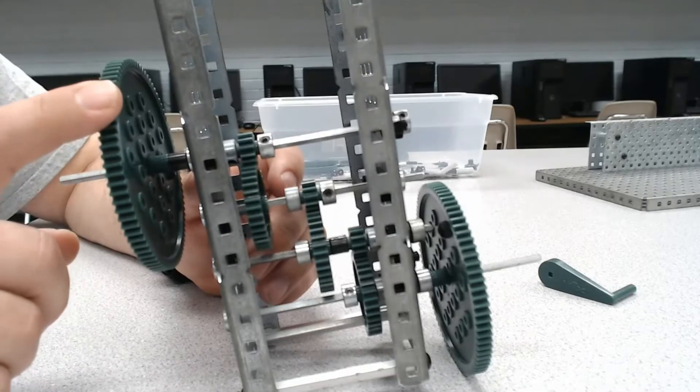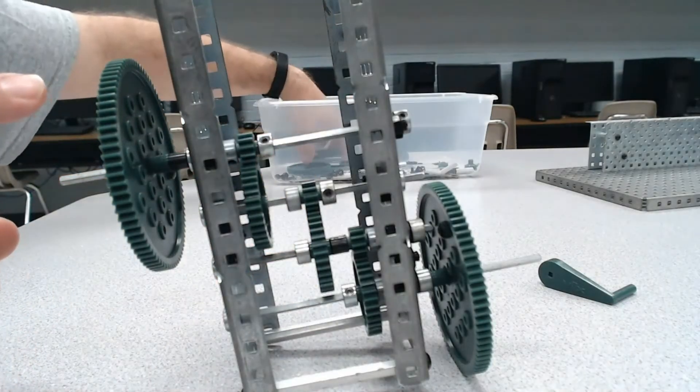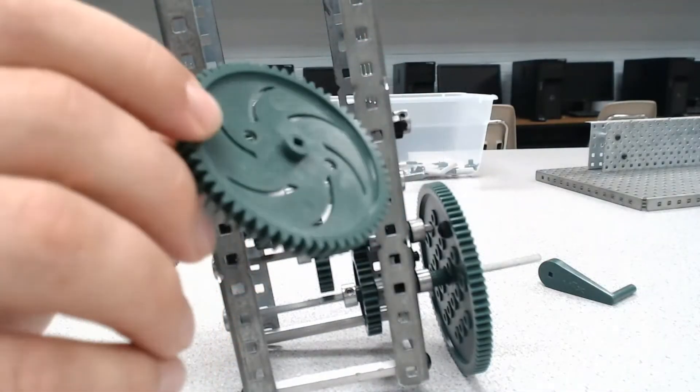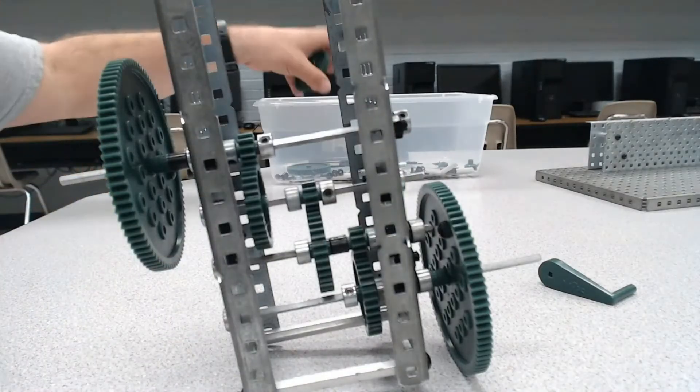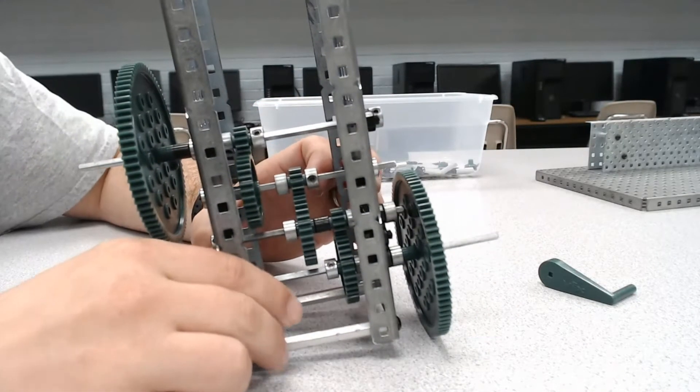This 84-tooth is directly connected to that 12-tooth. And since the axles are square, and the hole on the gear is square, as we can see there, that means that these two move at a one-to-one gear ratio.